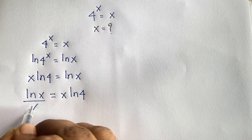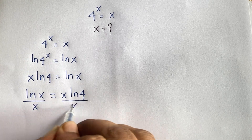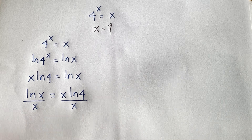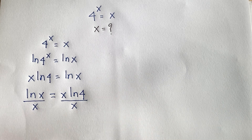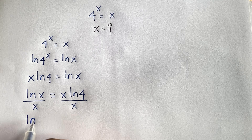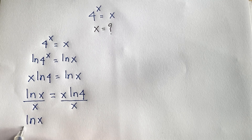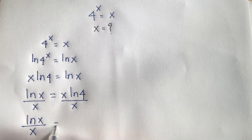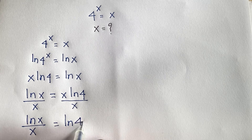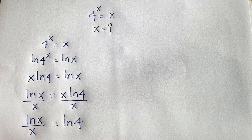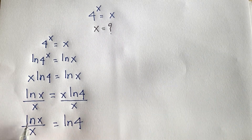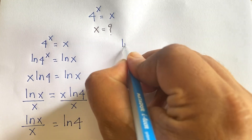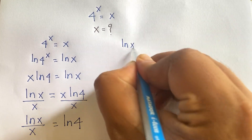Now at this moment if I divide both sides by x, this x and x cancel, and we find that ln x over x is equal to ln 4.